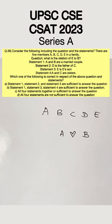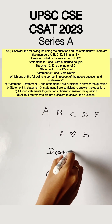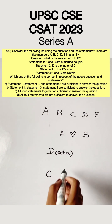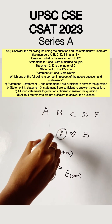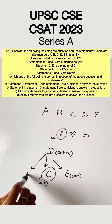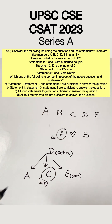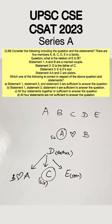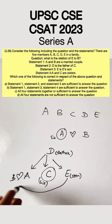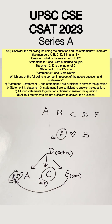Considering all 4 statements now: Statement 1 says A and B are a married couple. Statement 2 says D is the father of C. Statement 3 says E is D's son. Statement 4 says A and C are sisters. This means A, C, and E are all children of D, and B is married to A. So B is the husband of E's sister. Therefore, all 4 statements are enough to answer this question.